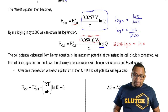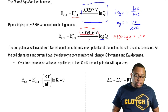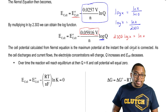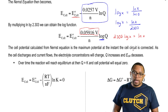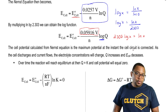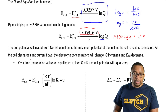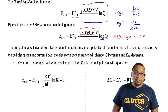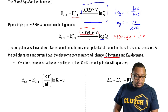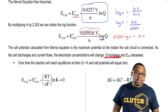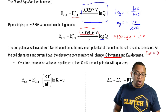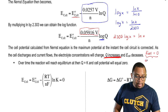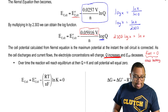The cell potential calculated from the Nernst equation is the maximum potential at the instant the cell circuit is connected — that's the moment that current, or the flow of electrons, moves from the anode to the cathode. As the cell discharges and current flows, the electrolyte concentrations will change. Q will begin to increase, and as a result, our cell potential over time will decrease.